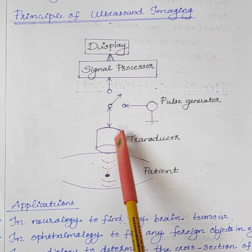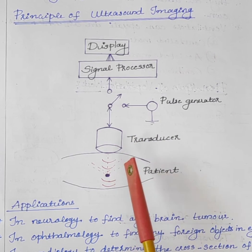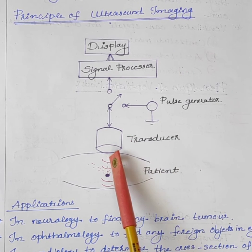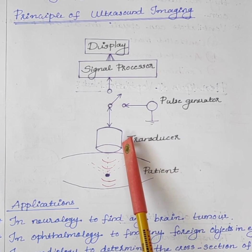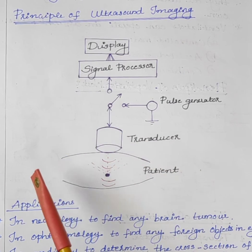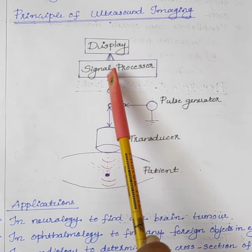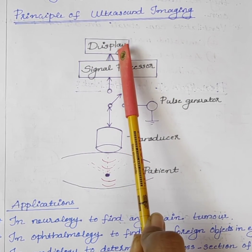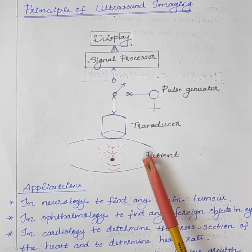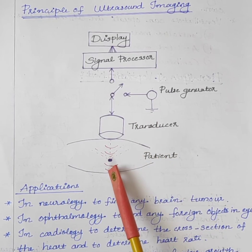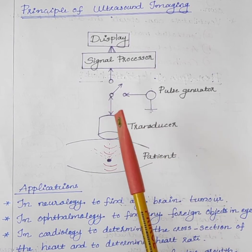The ultrasound beam enters the patient and is reflected back to the transducer. These reflected sound waves cause the crystals in the transducer to deform again and produce an electrical signal, which is then converted into an image and displayed on the monitor. Therefore, the same piezoelectric crystals are used to both generate and receive sound waves.